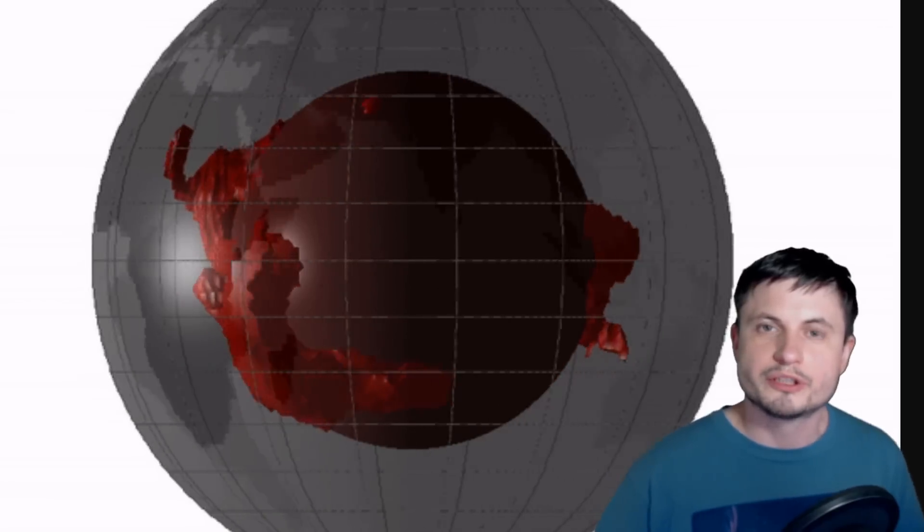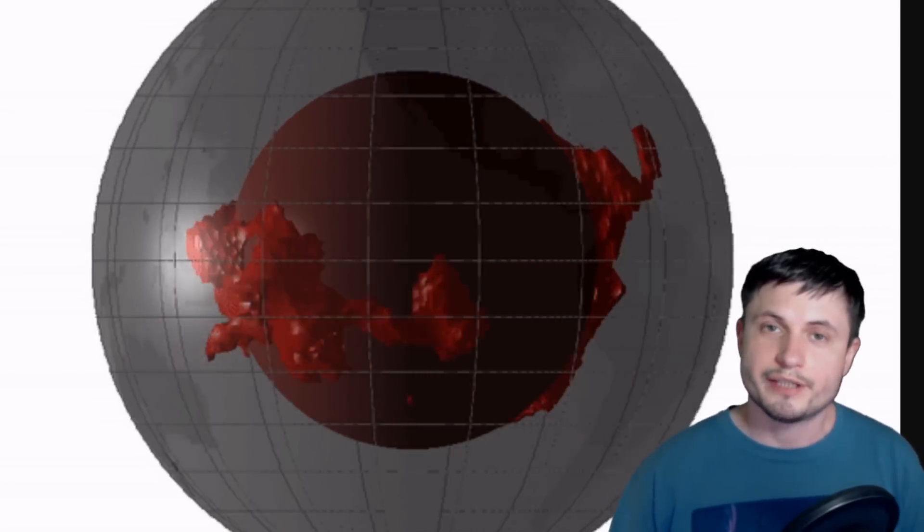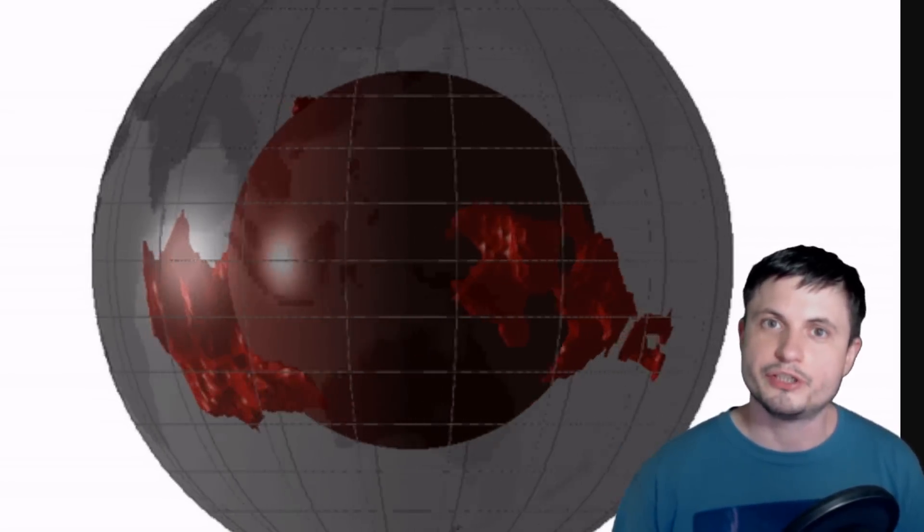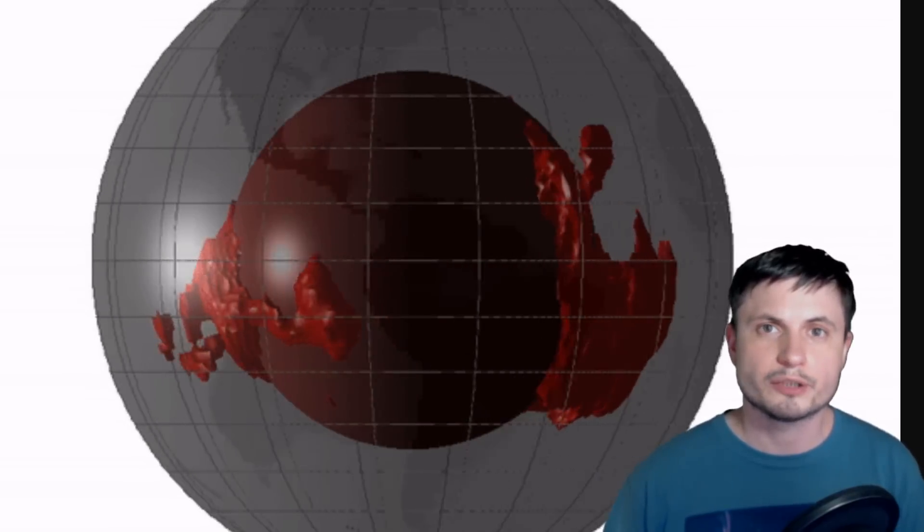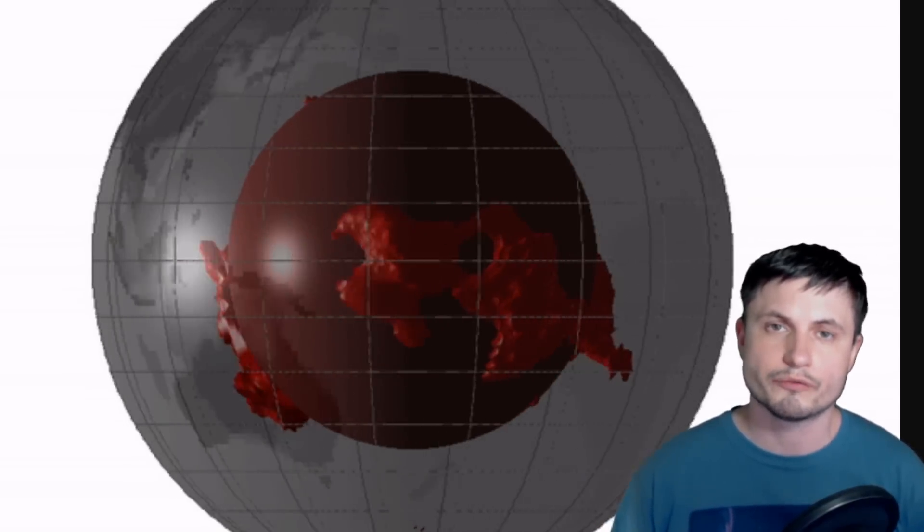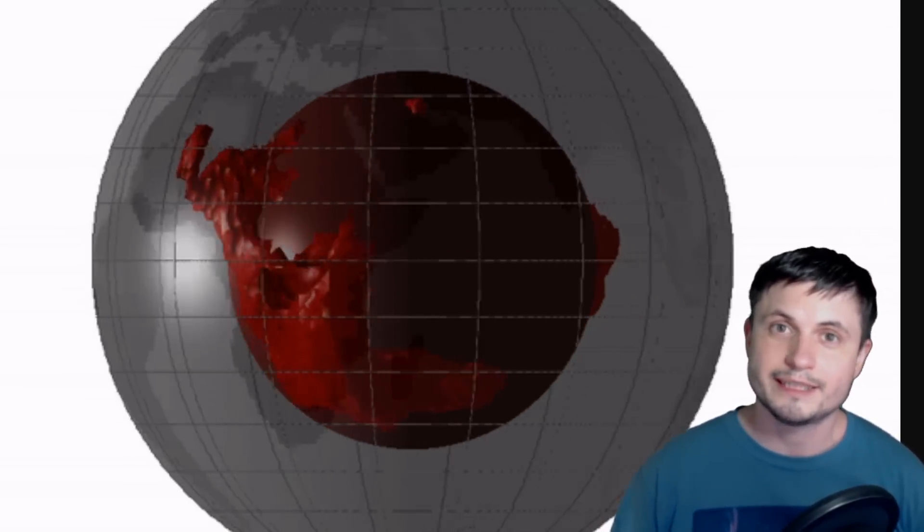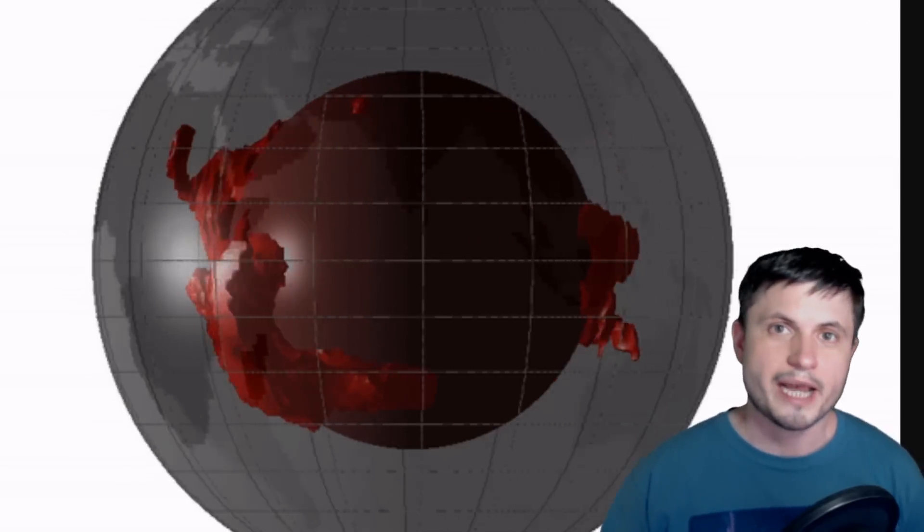And even though today we believe these are generated by these really large, possibly iron made blobs of matter that sort of circulate inside our planet, somewhat similar to the ones you see right here, the truth is that we actually don't know. These are just best guesses and trying to predict what's going to happen to the magnetic field of Earth is currently still not a very accurate science.